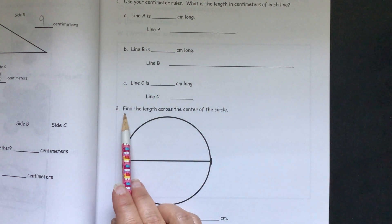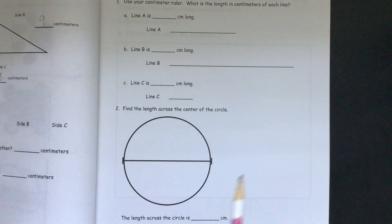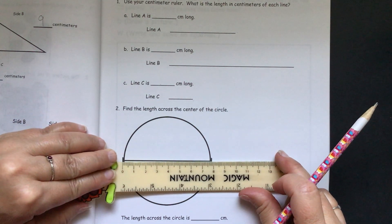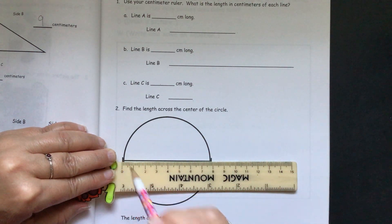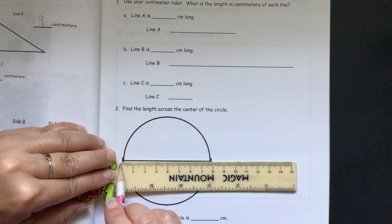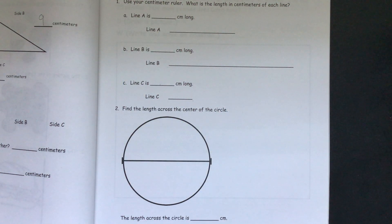Then, you need to find the length across the center of the circle. Remember, you're still lining up, either at zero or that first line. You don't start at one. Make sure it's either zero or where there's a little line on the side of your ruler. And, you get the answer. You put that right there. I hope this helped.